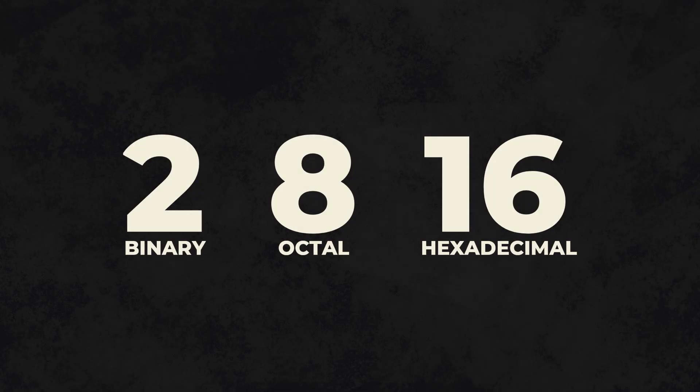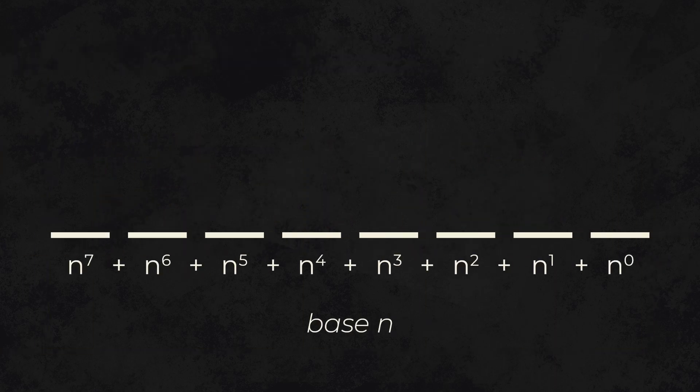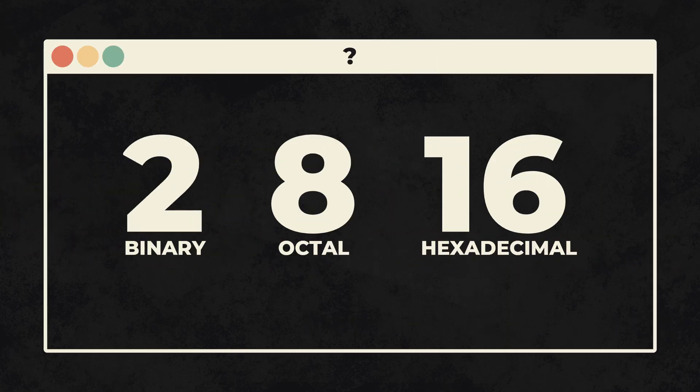Binary, octal, and hexadecimal are all number systems used by computers today. Though they're based on the same principle, they all have different strengths and applications. So, what distinguishes these number systems?